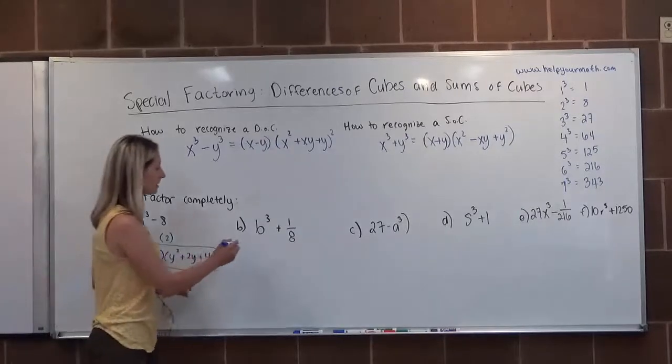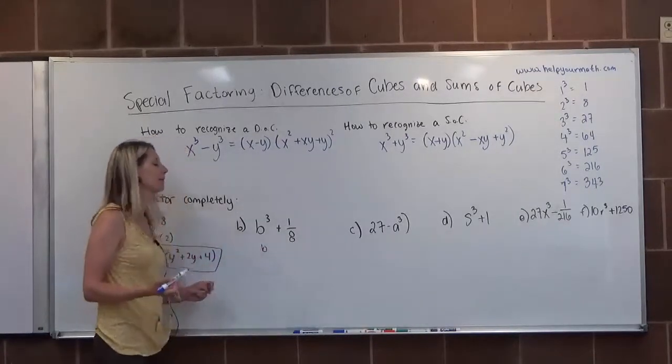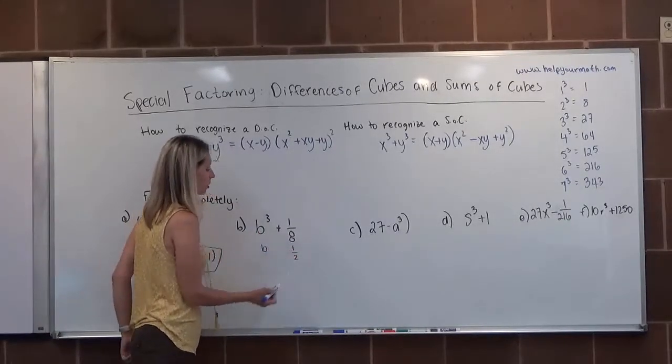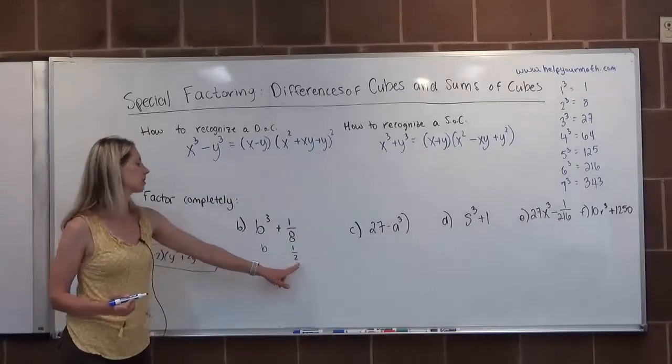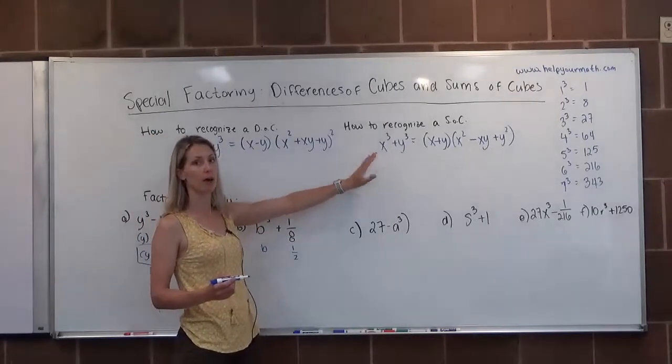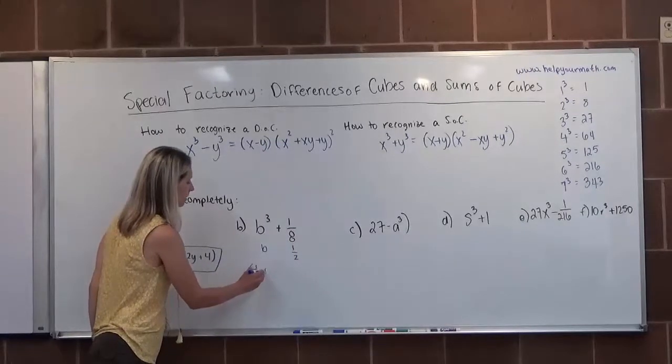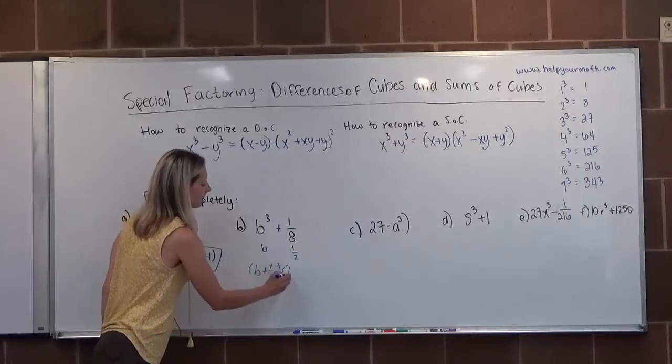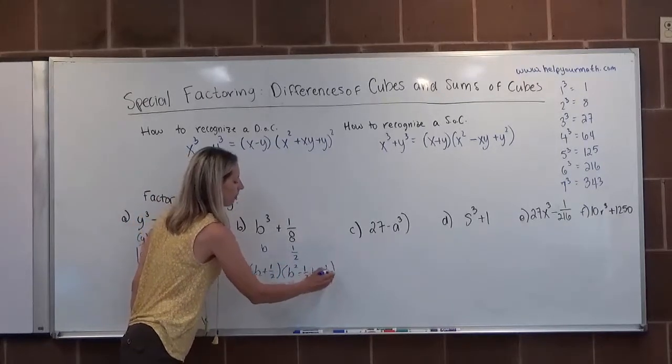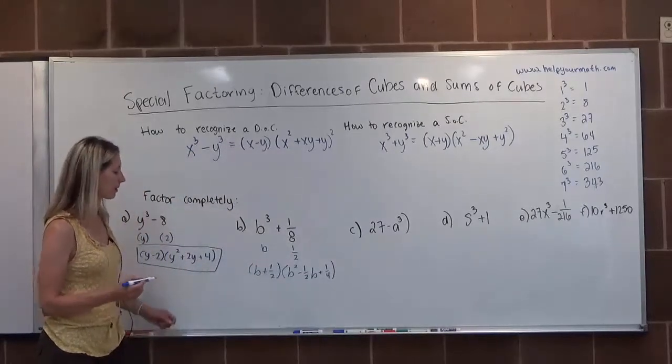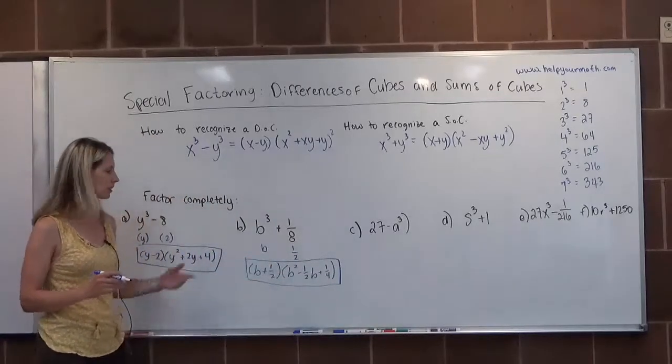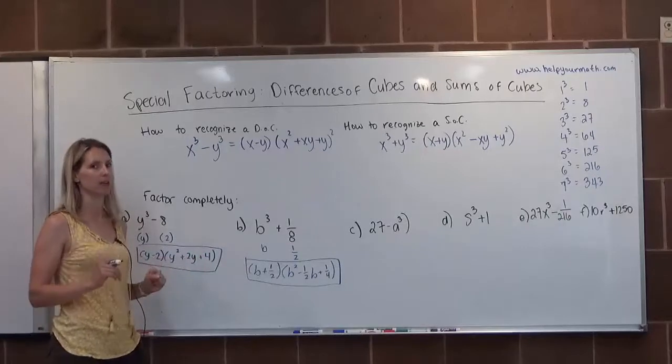Letter B, b cubed is a perfect cube and its root is b. 1 over 8 is a perfect cube because 1 has a root of 1 and 8 has a root of 2. So this would be the cubed root of b cubed and the root of 1 eighth. This is a sum, so we want to apply the sum of cubes formula. That would be (b + 1/2) times (b² - b/2 + 1/4). This would be our final factoring for letter B.